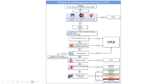If the patient is on hemodialysis, the switch can be either to a vitamin K antagonist or to apixaban. Apixaban is the only DOAC that the FDA has approved for use in this population. However, importantly, apixaban is not approved for this indication by the European Medicines Agency.